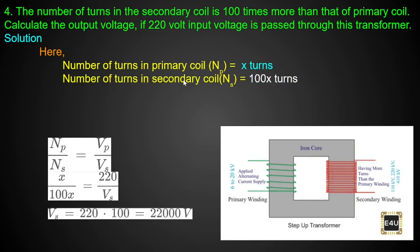Since the number of turns in the secondary coil is 100 times the primary coil, Ns equals 100x and Np equals x. This makes it a step-up transformer because the secondary turns are greater than the primary turns.